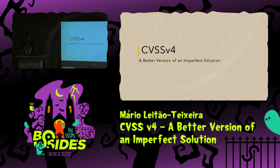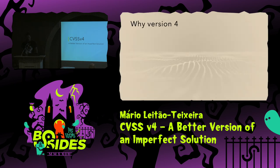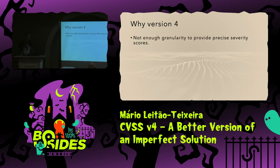Let's go to what matters. We're here today to talk about the latest version of CVSS and how it's better, but still not a perfect solution. So, why version four? First of all, there wasn't enough granularity before to provide precise severity scores. You could have two distinct vulnerabilities that would end up with the same score, which wasn't really good if you want to distinguish them and be able to prioritize somehow.